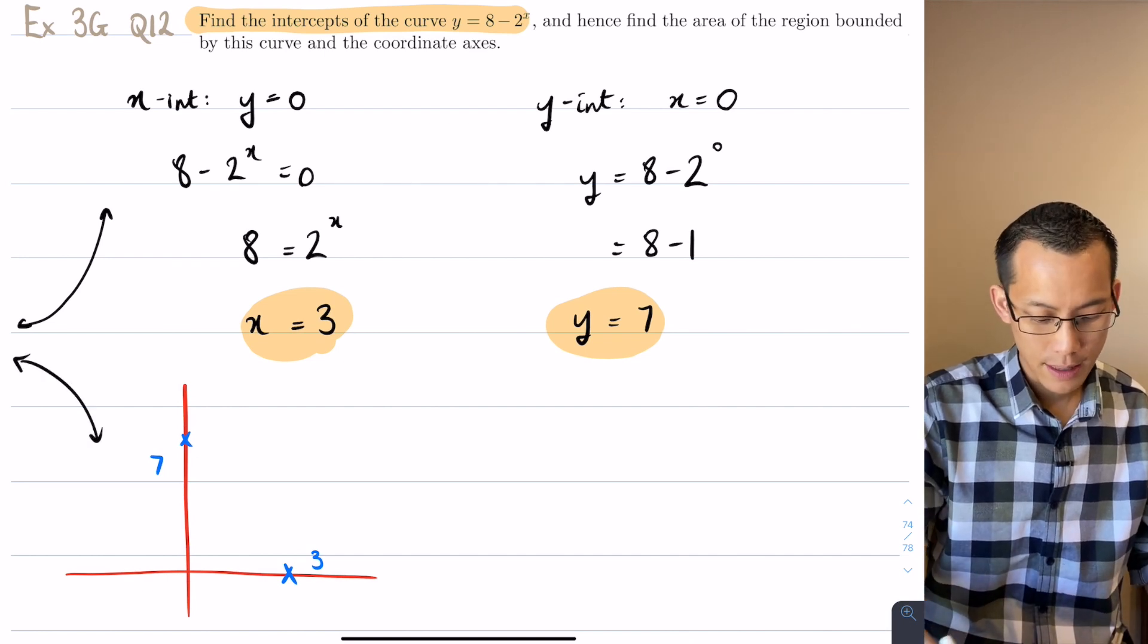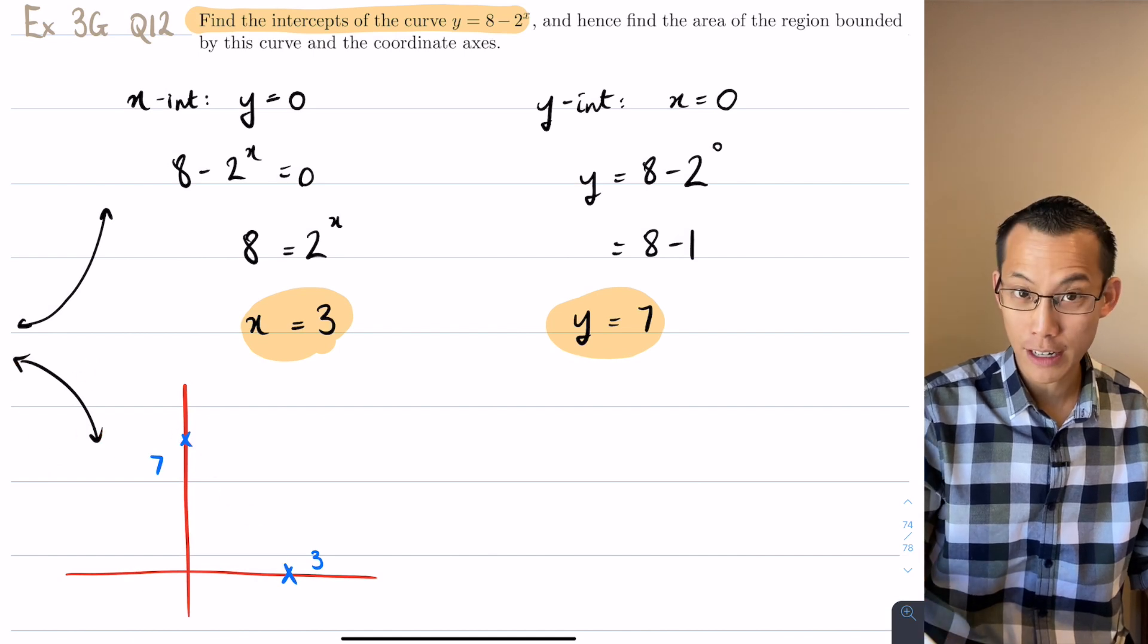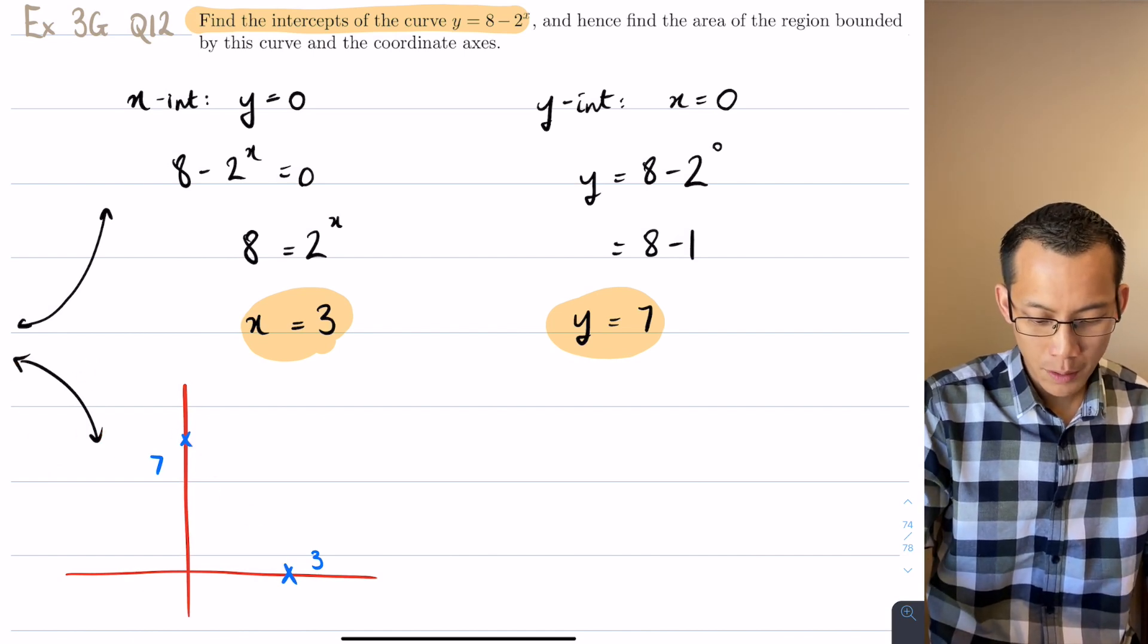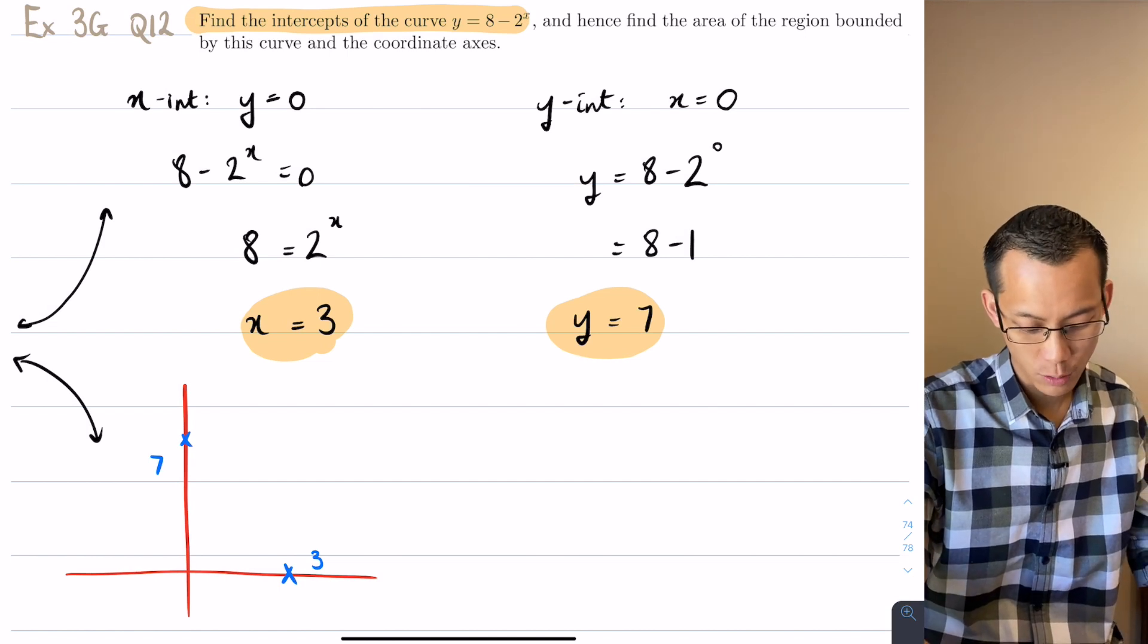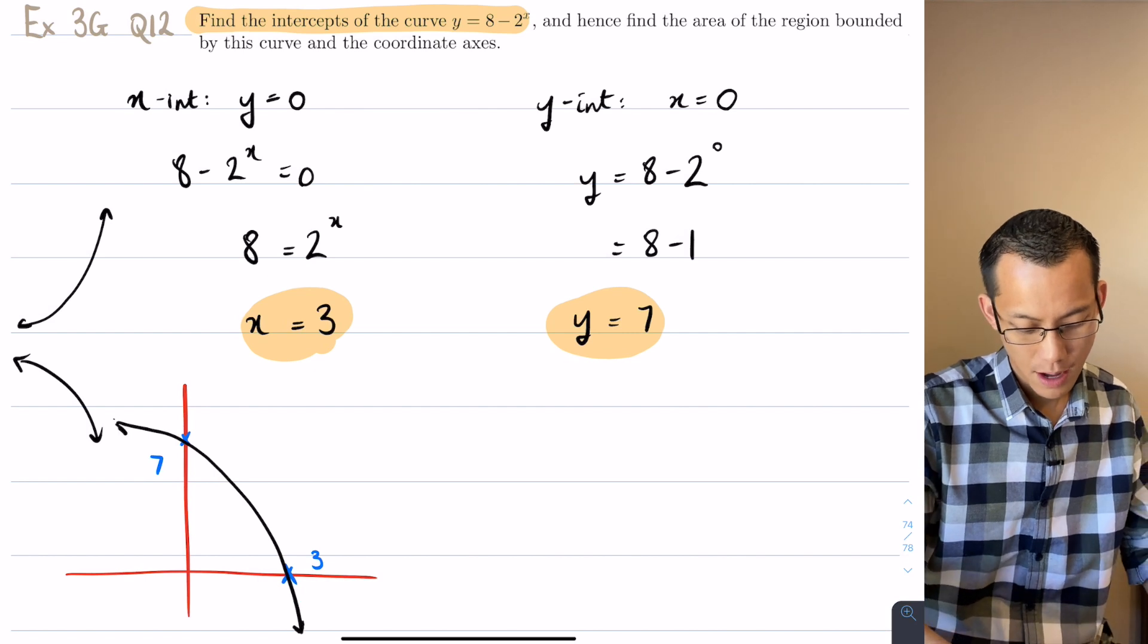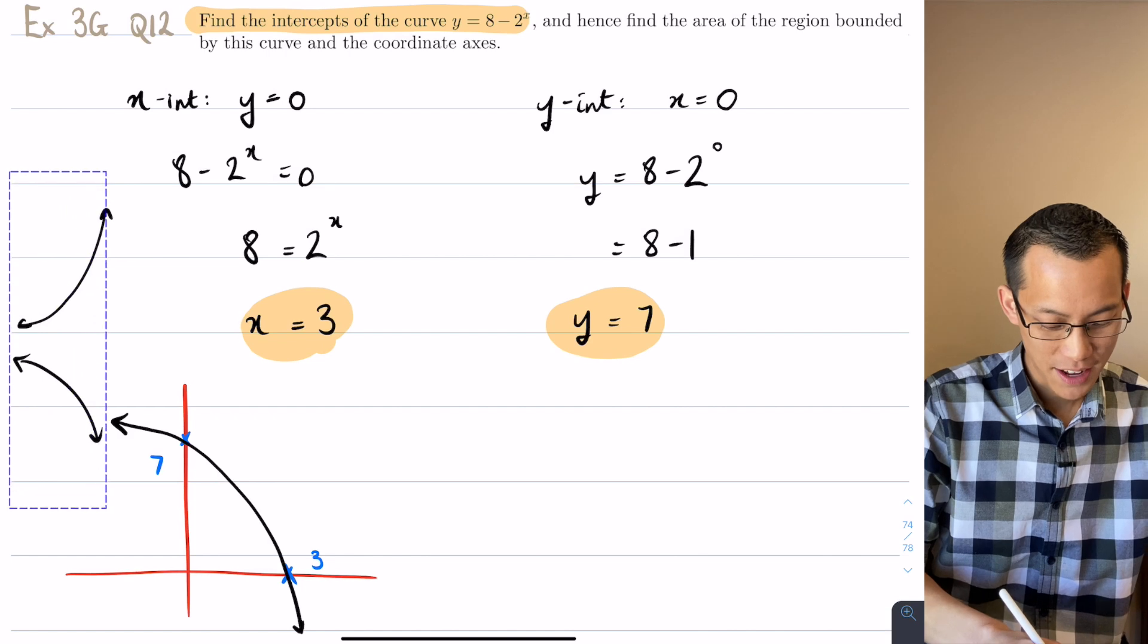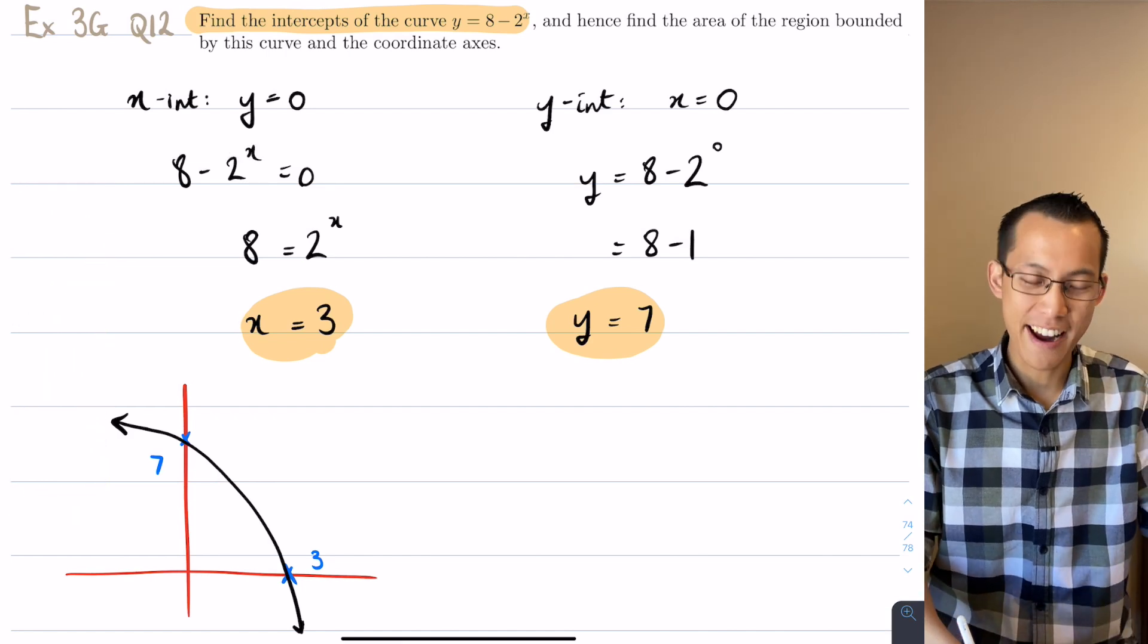And thankfully this shape right here does actually match what we're trying to fit into. So therefore what I'm going to do is I'm going to try and thread the needle with this shape. It's going to look something like that. It's not my best work but I don't need it to be beautiful. I just need it to be good enough to work out the relevant area.